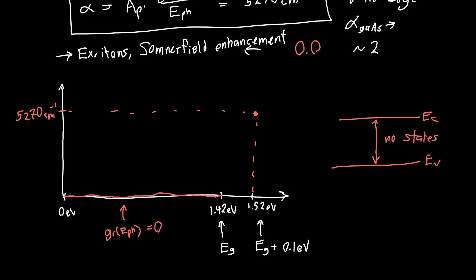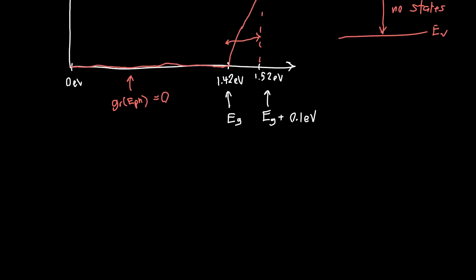So up to the band edge, our absorption coefficient should be 0. And then once it hits the band edge, it starts to look kind of like this square root shape. So it starts to look kind of like this. And if we zoom in, let's zoom in on this region, and just draw this region below.